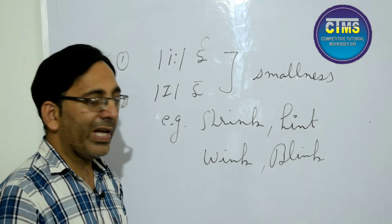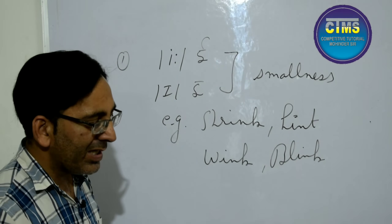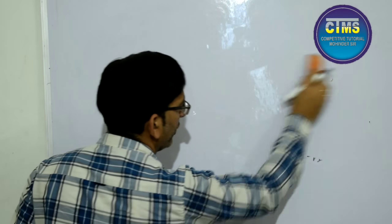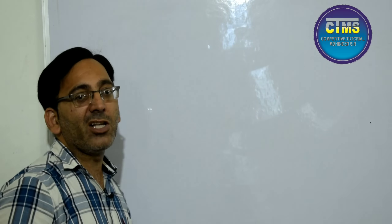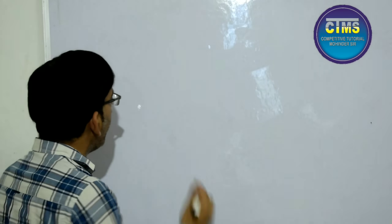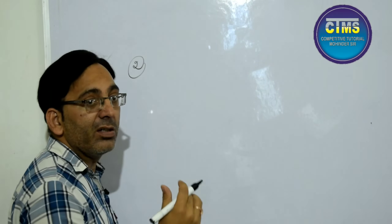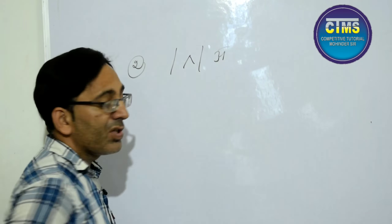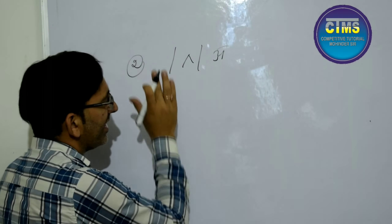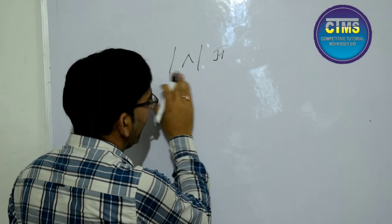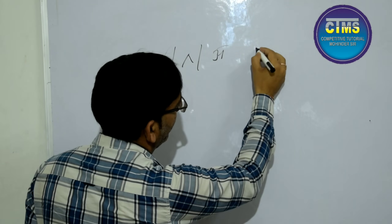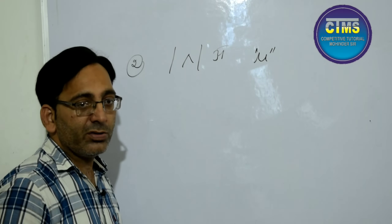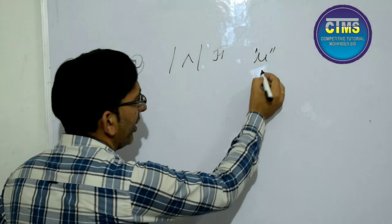So the examples are shrink, hint, wink, and blink. Now come to the next example. I have dealt with only two sounds — the short-e and the long-e. Another sound in English is the ʌ sound. In writing we see the letter 'u', but in pronunciation we get the ʌ sound. So this 'u' sound actually suggests undesirable things.